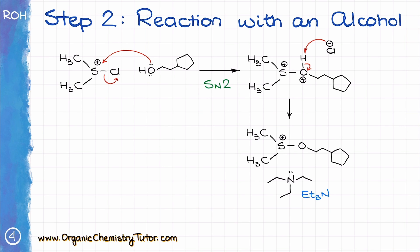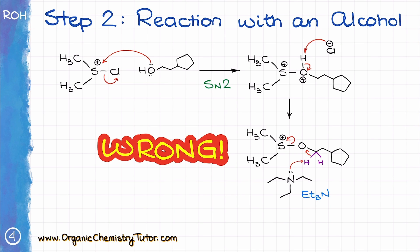Typically, the base of choice here is going to be triethylamine, although some other alternatives are also possible. Now, there is a correct way to show the next step in the mechanism, and there is an incorrect one. Some textbooks and instructors want to show this step in an analogous way to other oxidations you've most likely seen up to this point — namely something like Jones oxidation or oxidation with PCC — so they immediately go after the alpha hydrogens right away. However, the research data doesn't support that pathway.